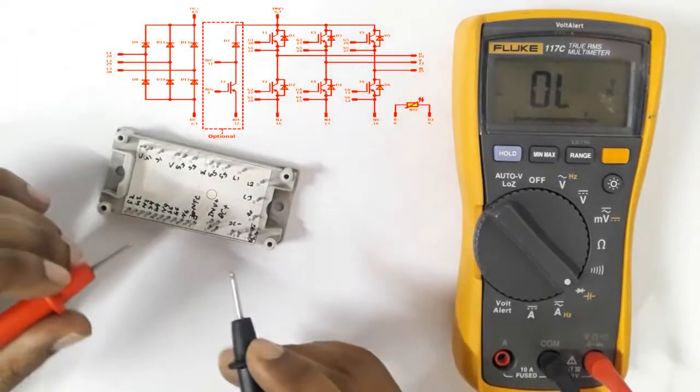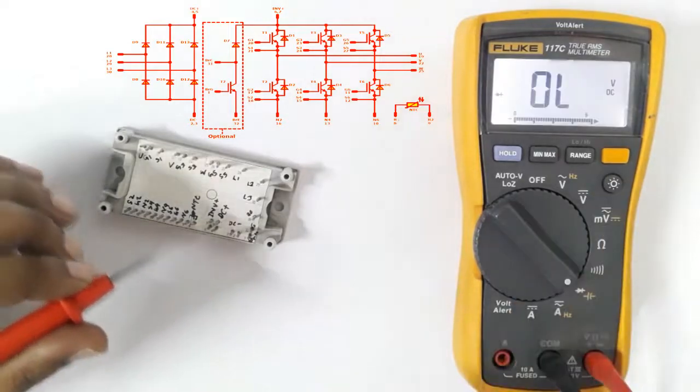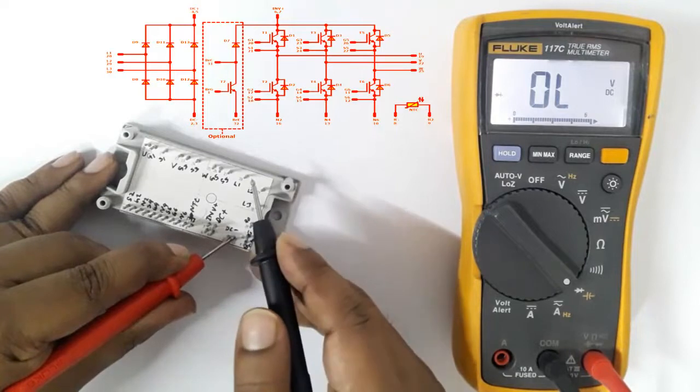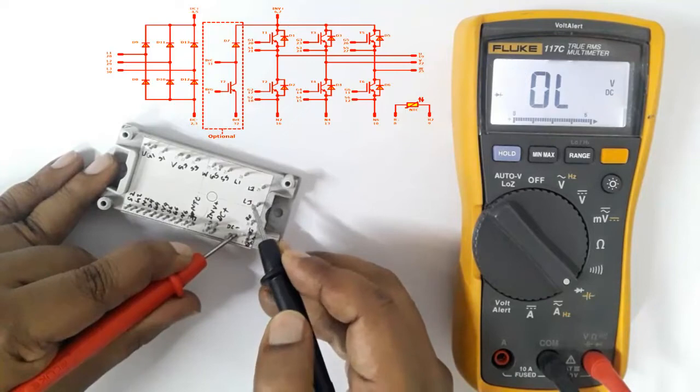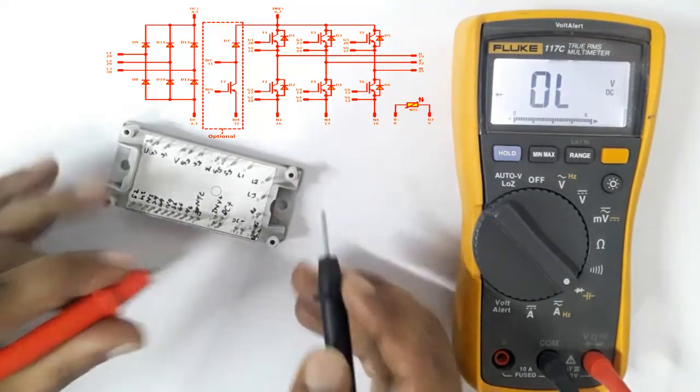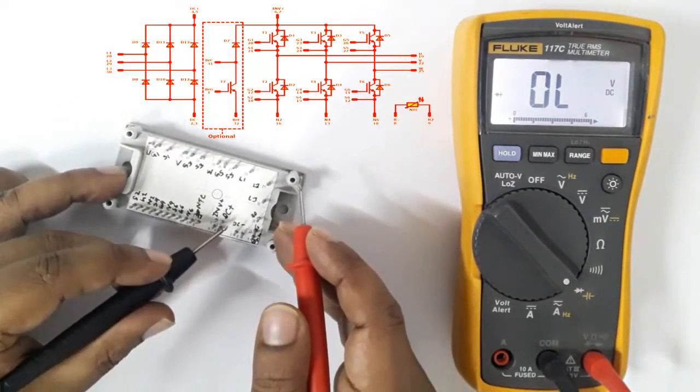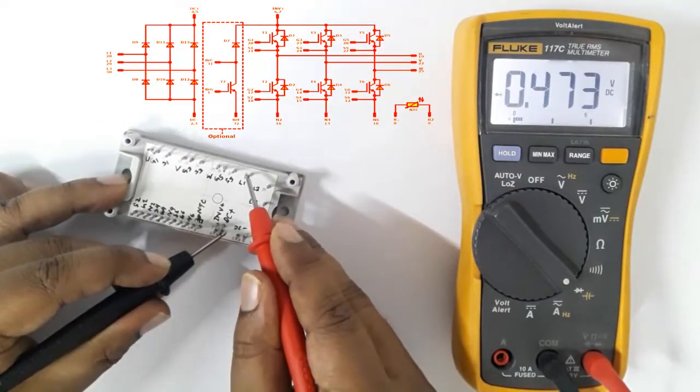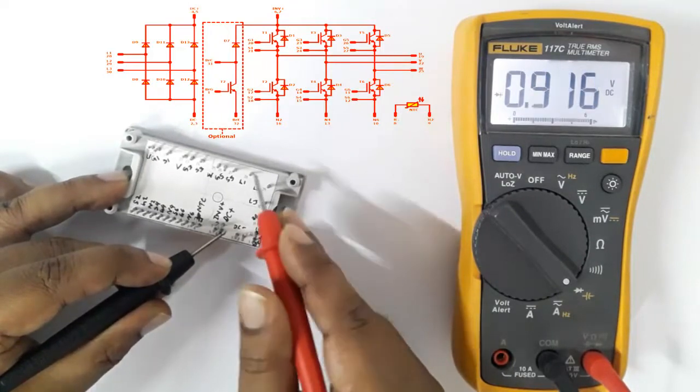Vinko IGBT testing. DC negative testing on L1, L2, and L3, all are about 0.478 volts DC. Now testing against DC positive, black probe in DC positive, testing L1, L2, and L3.